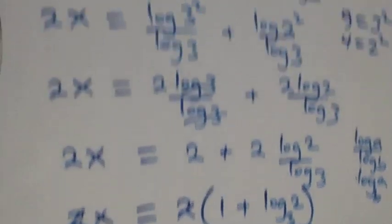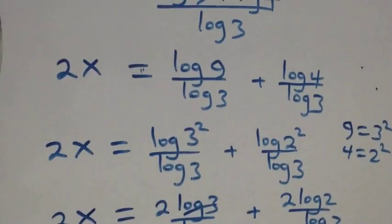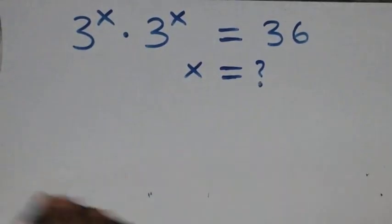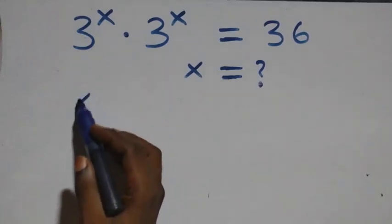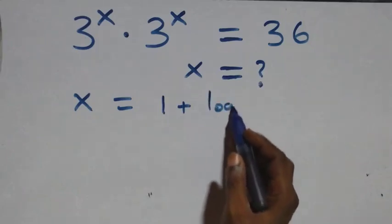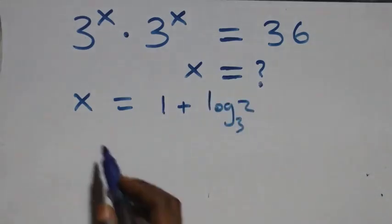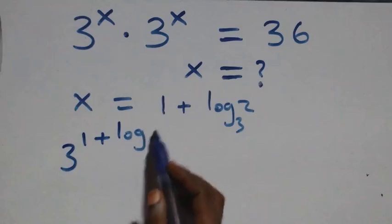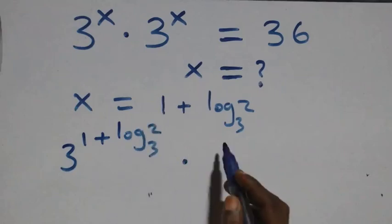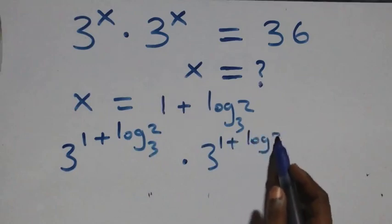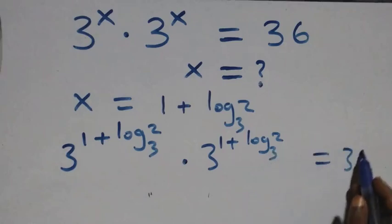Now let's check if this satisfies the given problem. We substitute the value of x, which is x equals 1 plus log 2 base 3. Then what we have becomes 3 raised to power 1 plus log 2 base 3, times 3 raised to power 1 plus log 2 base 3. Is it equal to 36?